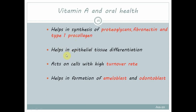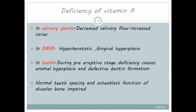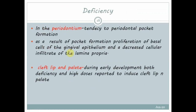Regarding oral health, vitamin A helps in synthesis of proteoglycans, fibronectin and type 1 procollagen. It aids epithelial tissue differentiation, acts on cells with high turnover rate and helps in formation of ameloblasts and odontoblasts. Deficiency affects salivary glands causing decreased salivary flow and increased caries. Oral mucous membrane shows hyperkeratosis and gingival hypoplasia. During the pre-eruptive stage, deficiency causes enamel hypoplasia and defective dentine formation.